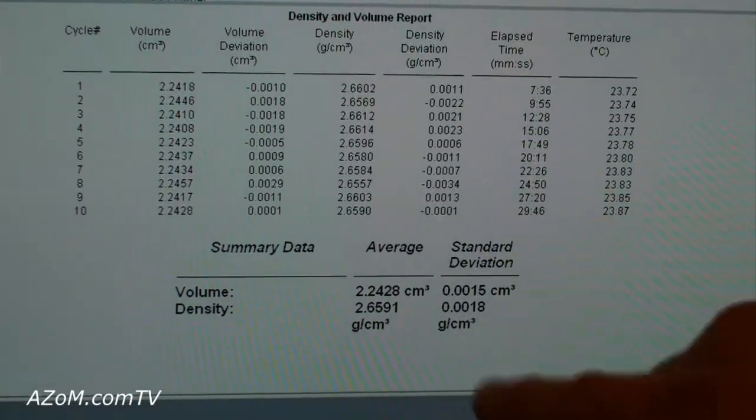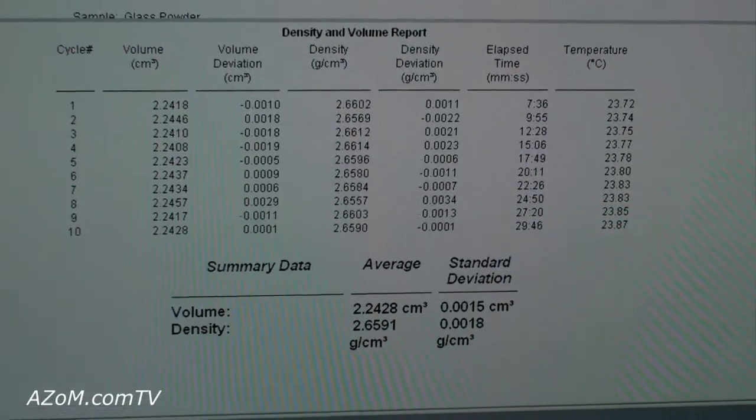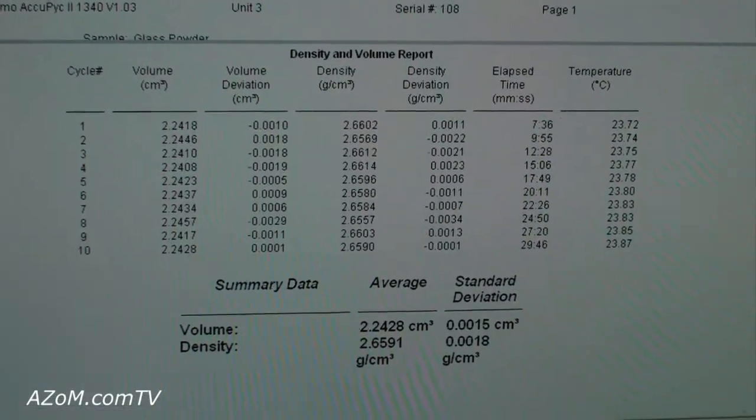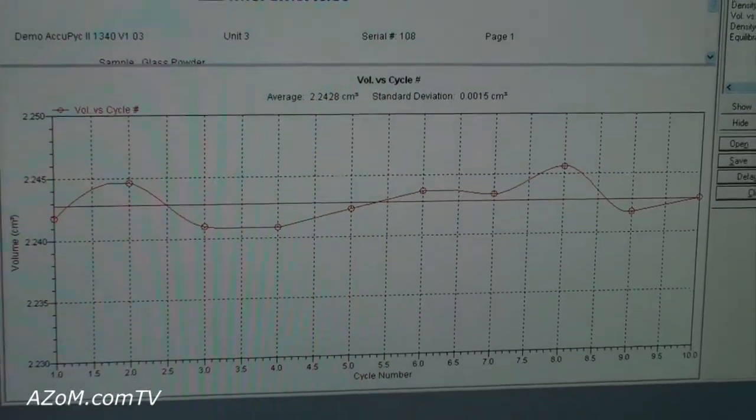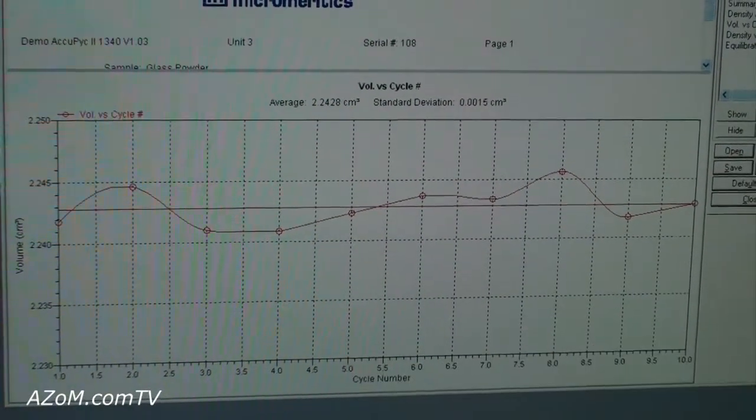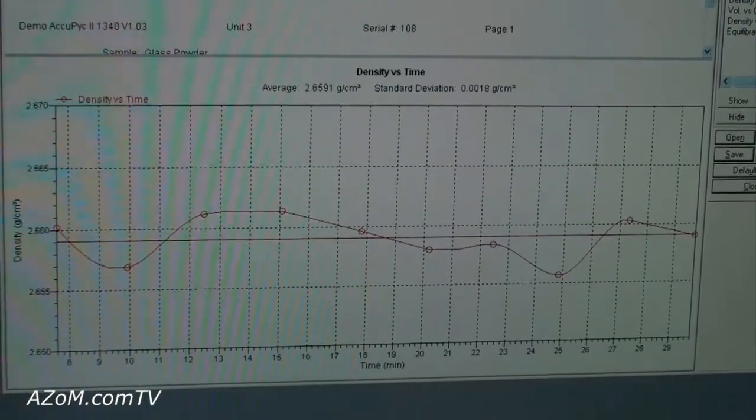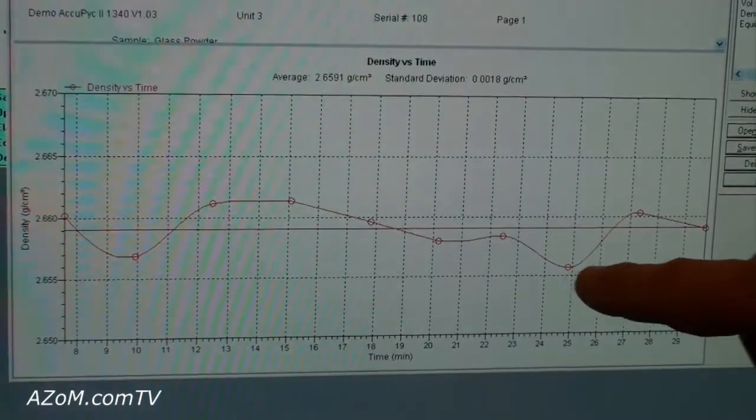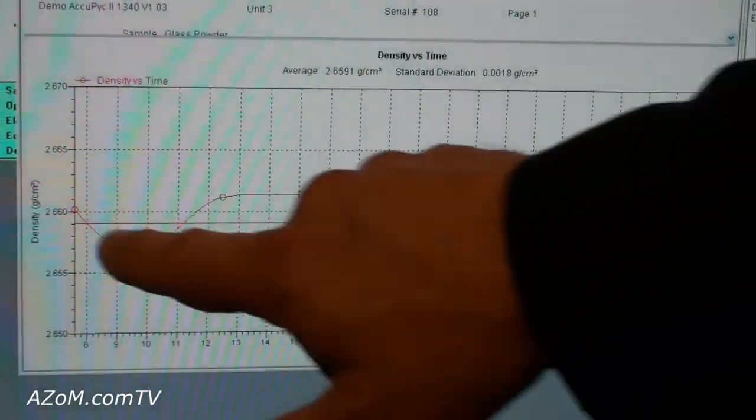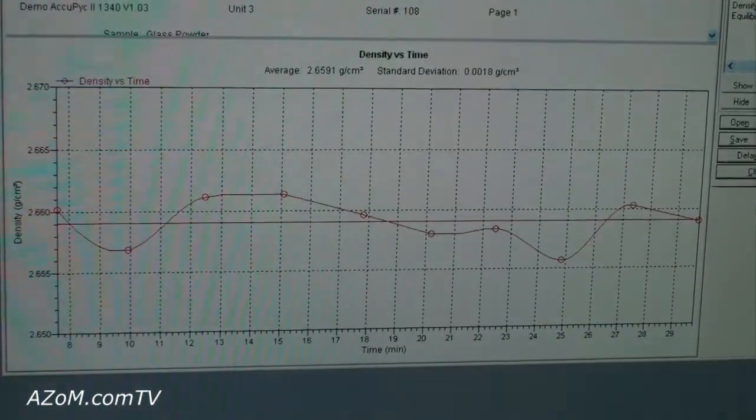In this particular example, we have got a plot of volume versus the number of tests, as well as density versus the number of tests. And this is what you are seeing in both of these is the actual test points of each of the 10 replicates and the average value for these tests.